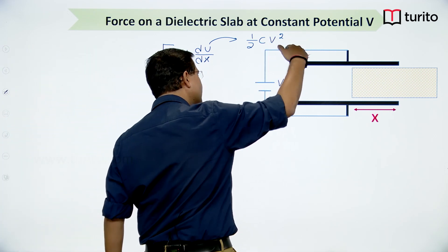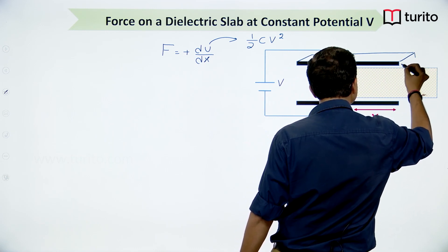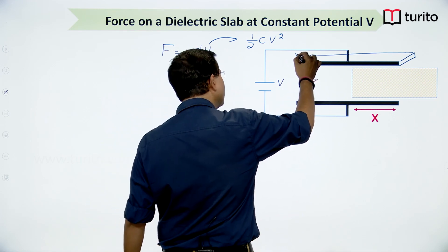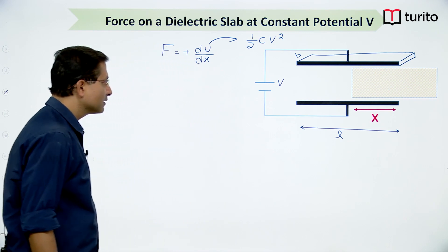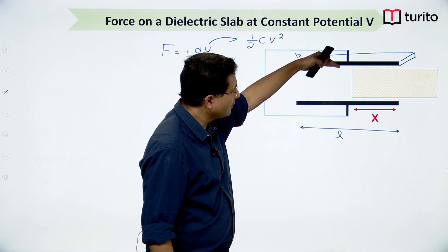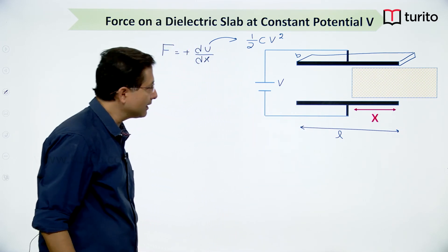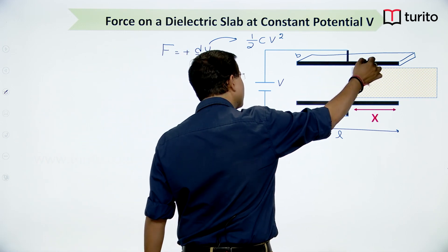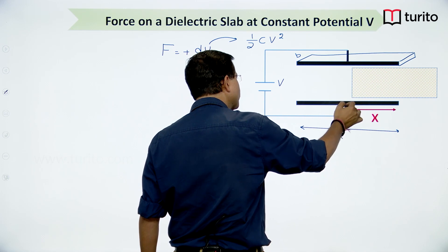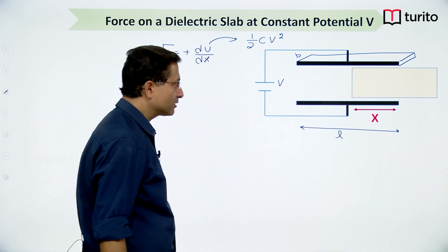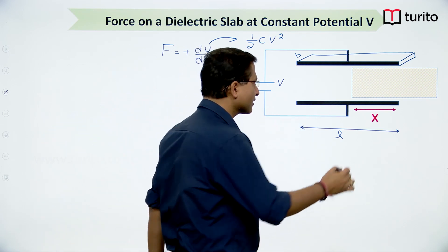Let the width of the plate be b and the total length be l. We can see there are two capacitors: one having dielectric and another without dielectric. These two are connected in parallel combination because their terminals are connected together. So I can write the capacitance of each part separately.